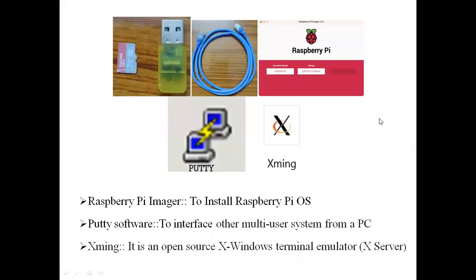We need to be ready with these three softwares first: PuTTY software, Xming software, and Raspberry Pi Imager. The purpose of the Raspberry Pi Imager is to install the Raspberry Pi OS into the memory card. The purpose of PuTTY software is to interface a multi-user system from a PC. The purpose of Xming software is that it is an open-source X Window terminal emulator.